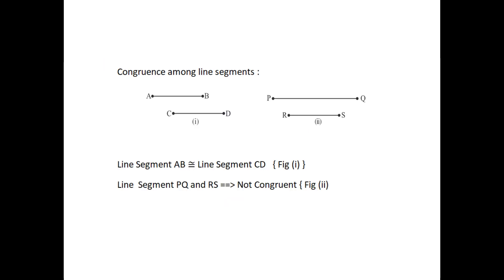Next, concurrence among line segments. For this, copy the line segment CD and place it on the line segment AB. You find that CD covers the line segment AB with C on A and D on B. Hence, the line segments are concurrent. Repeating this activity for the pair of line segments in figure 2, they are not concurrent, because the line segments do not coincide when placed one over the other. Therefore, if two line segments have the same length, they are concurrent. Or, if two line segments are concurrent, they have the same length.